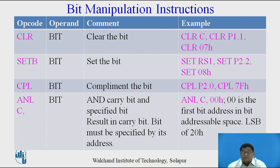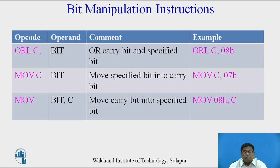Bit address 07 is the MSB bit of byte address 20h. Then SETB is used to set a bit in the same fashion. Then CPL is used to complement the bit. In the operand column, the bit refers to the address of the bit, and that address must be between 00 and 7Fh. Then for AND operation: ANL C, bit — it will perform the AND operation between the carry bit and the specified bit. Then ORL for the OR operation.